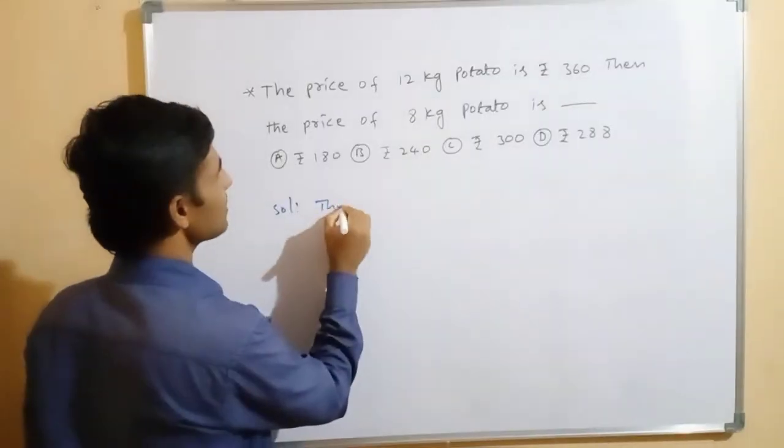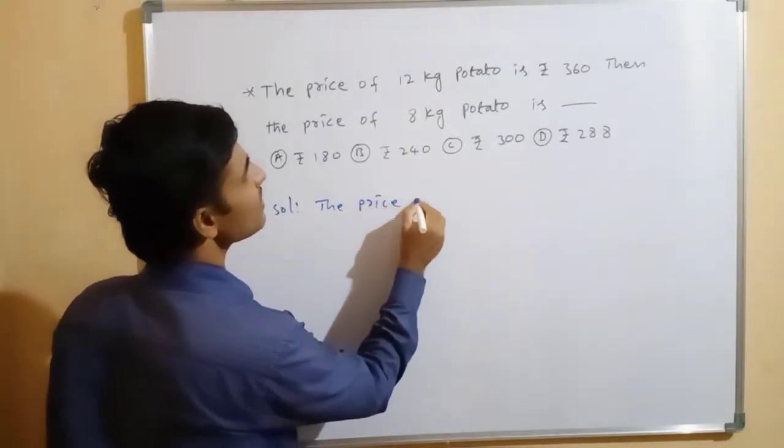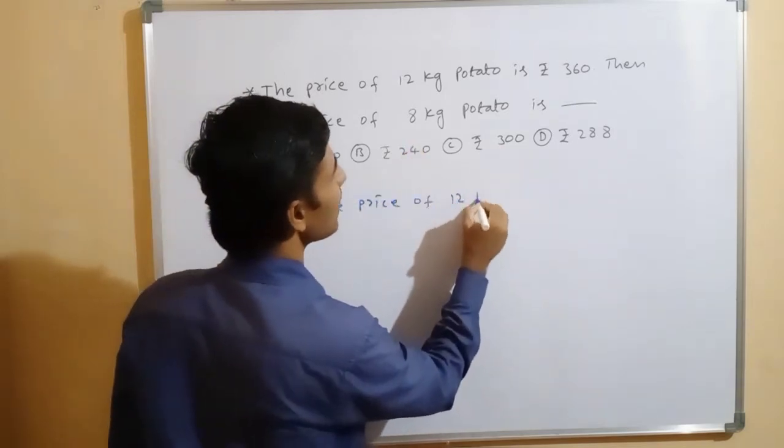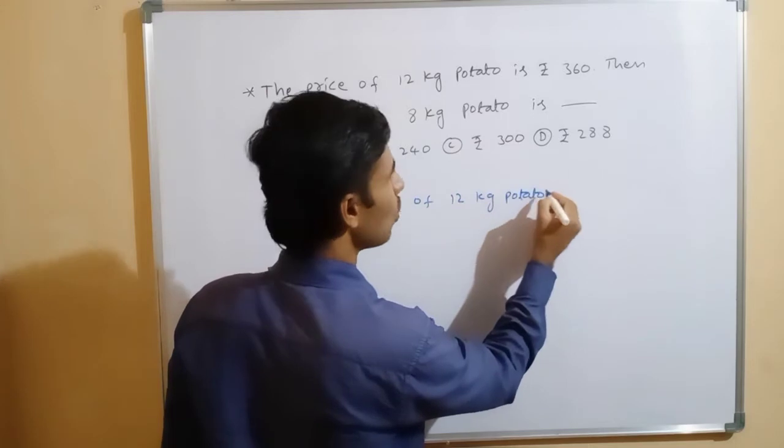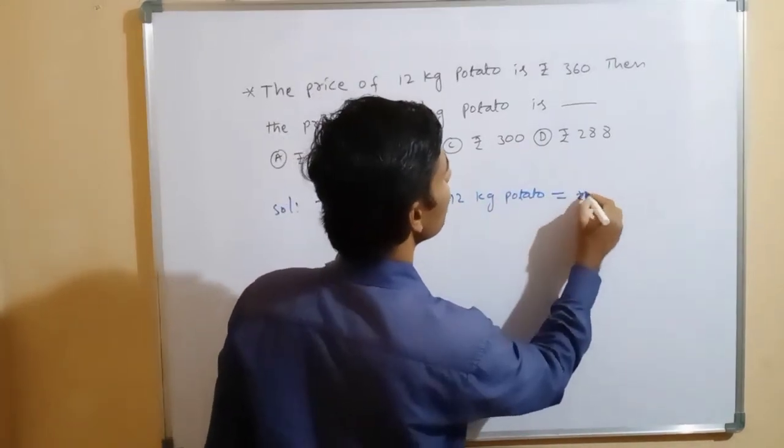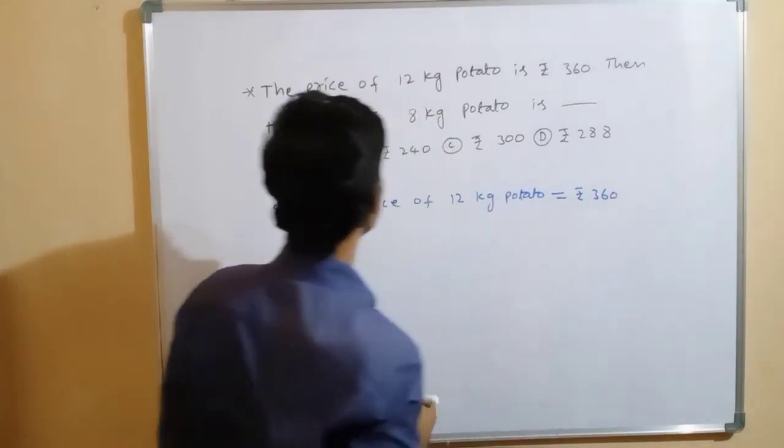Okay, the price of 12 kg potato equal to how much they given here? Rs. 360. Now,